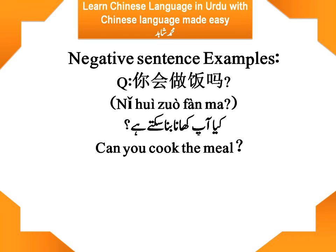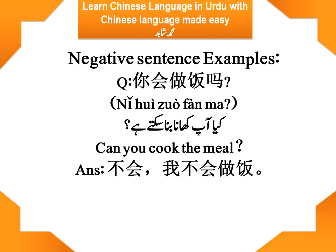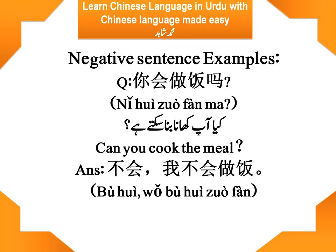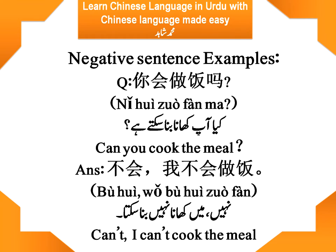Cooking is a skill, so we use 会 for it. And if he does not possess this skill, he can answer: 我不会做饭. I cannot cook the meal. This is the pinyin of it, and this is the Urdu of it. 不会 means 'cannot' — I can't cook the meal.